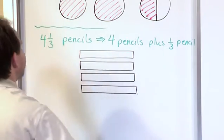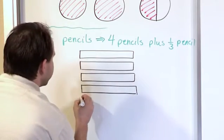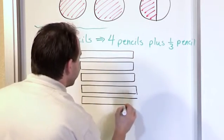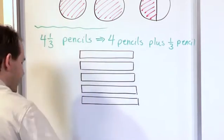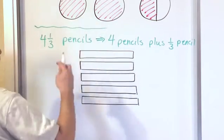But anyway, if I wanted to represent graphically four and a third, actually I have one more I need to draw here. You'll see why in just a second. So here's my fourth pencil on the board. All right, so if I have this, or my fifth pencil I have on the board, if I wanted to represent this, four and a third.